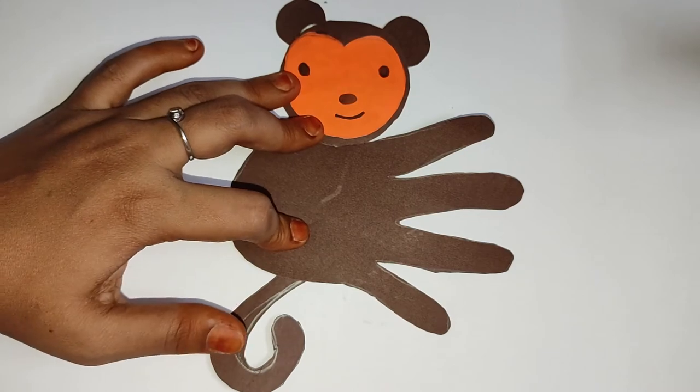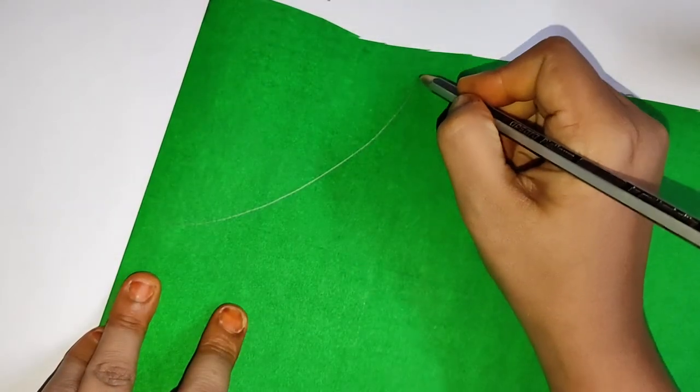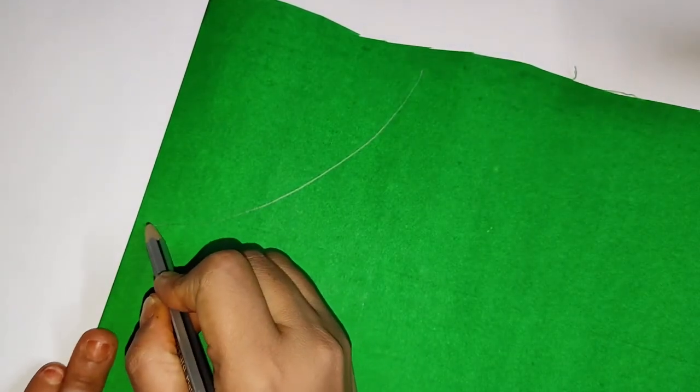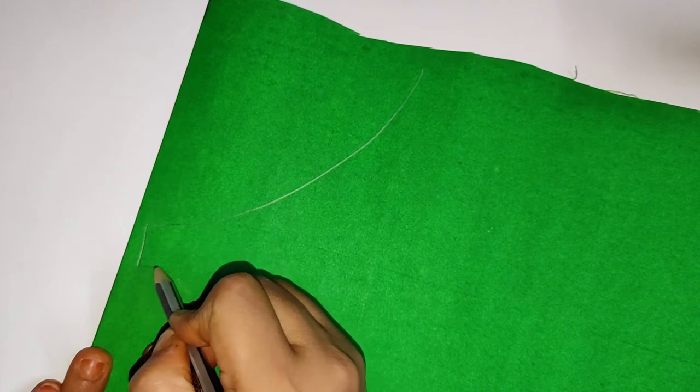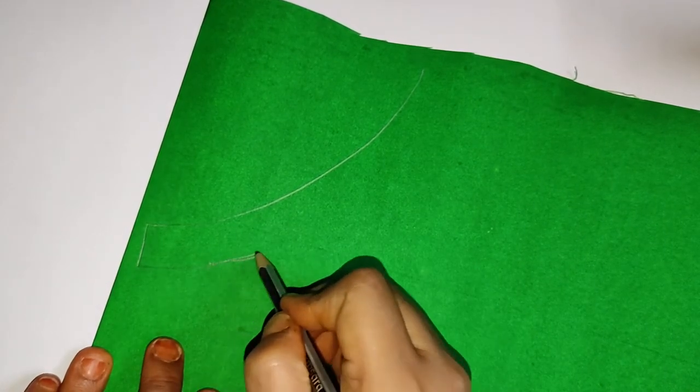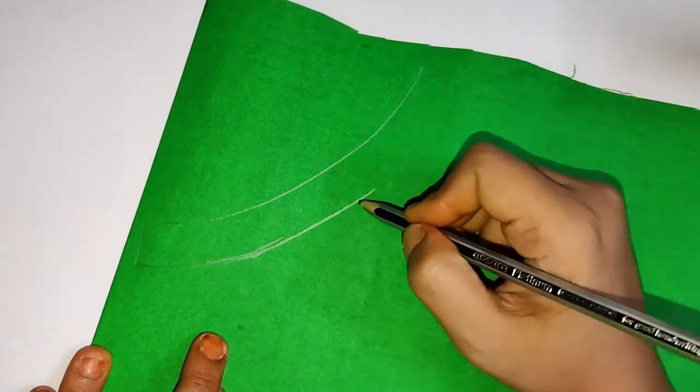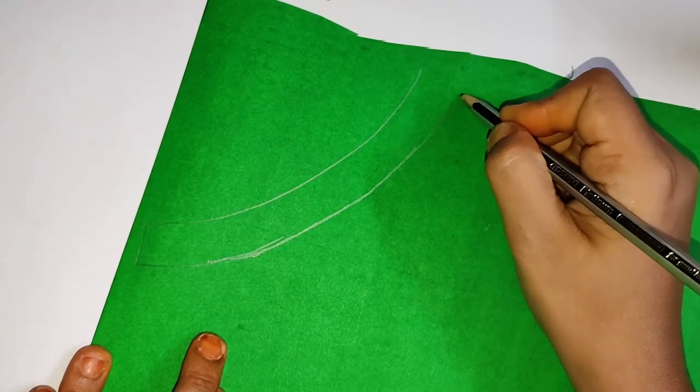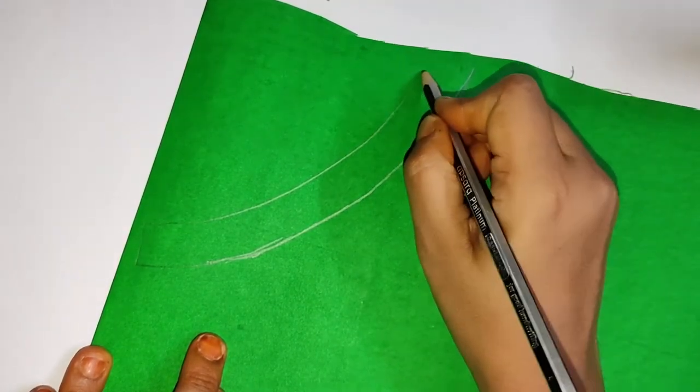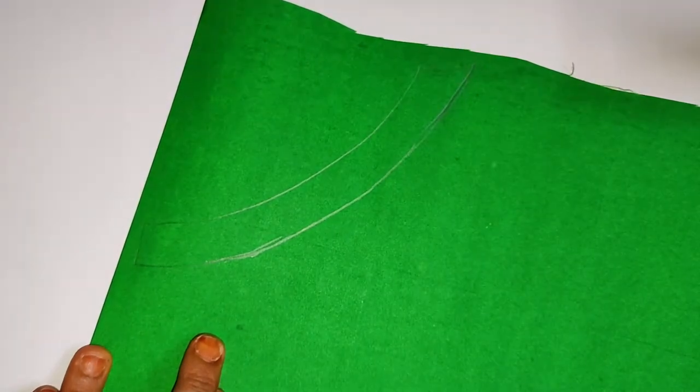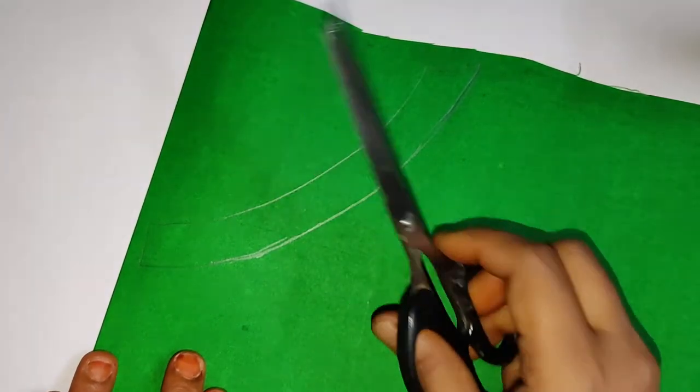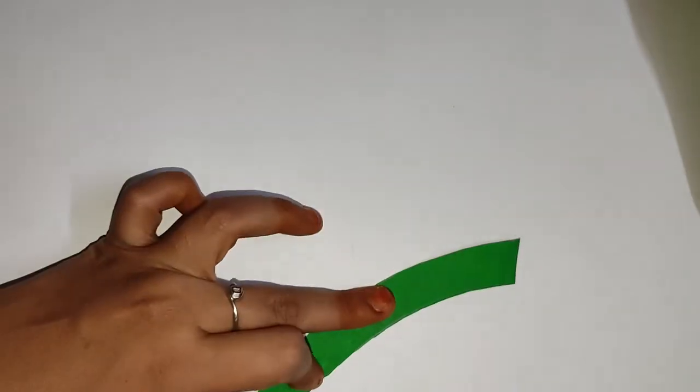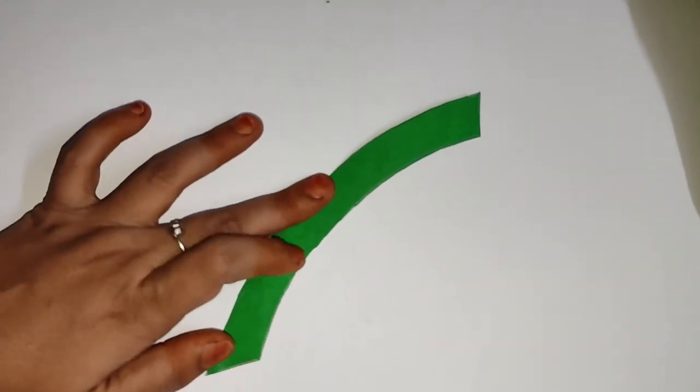The head and the tail part. Now we'll take the green chart paper to draw the branches, the tree branches. Most of the times monkeys will climb on the trees, so we'll make a small branch so that our monkey can also hang on that branch.